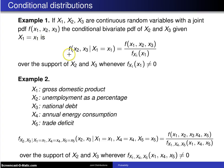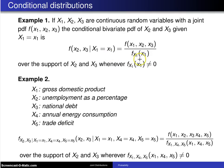The notation is f of x2, x3 given x1 equals x1. In the numerator, you have the joint probability density function of x1, x2, and x3, divided by the marginal PDF associated with the given variable x1. This is defined over the support of x2 and x3, and it assumes that you are not dividing by zero.